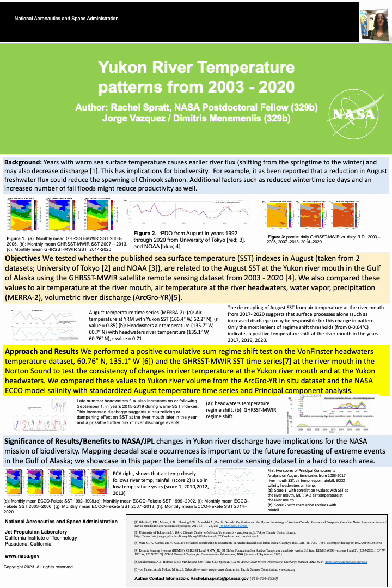In this study we tested whether published sea surface temperature indices in August from the PDO, taken from two datasets from the University of Tokyo and NOAA, are related to August sea surface temperature at the Yukon river mouth and the Gulf of Alaska using the GHR SST microwave and infrared remote sensing satellite dataset over the time period 2003 to 2020. We also compared these values to air temperature at the river mouth, air temperature at the river headwaters, water vapor, precipitation, and volumetric river discharge from the Arctic Great Rivers Observatory.